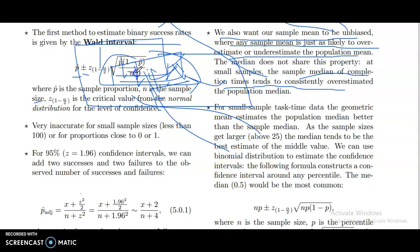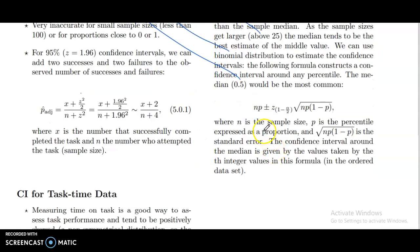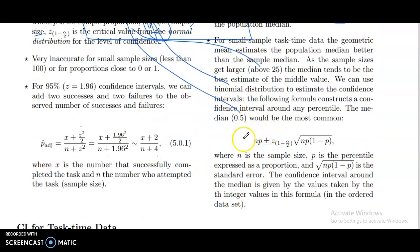The following formula constructs a confidence interval around any percentile. The median, 0.5, would be most common. The formula is: Np plus or minus z of (1 minus alpha) divided by 2, multiplied by the square root of Np times (1 minus p).